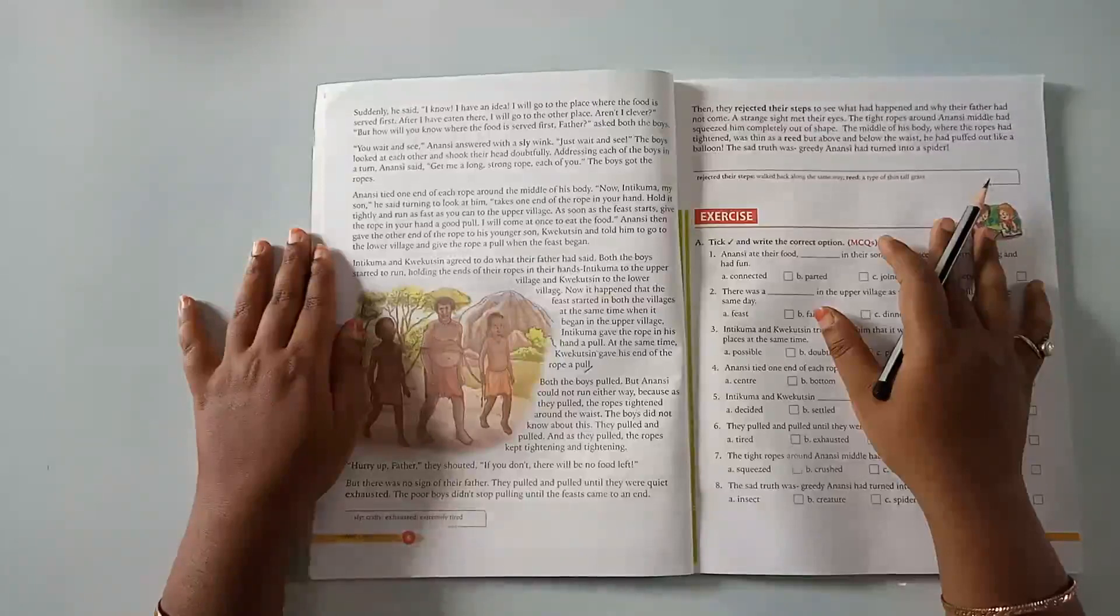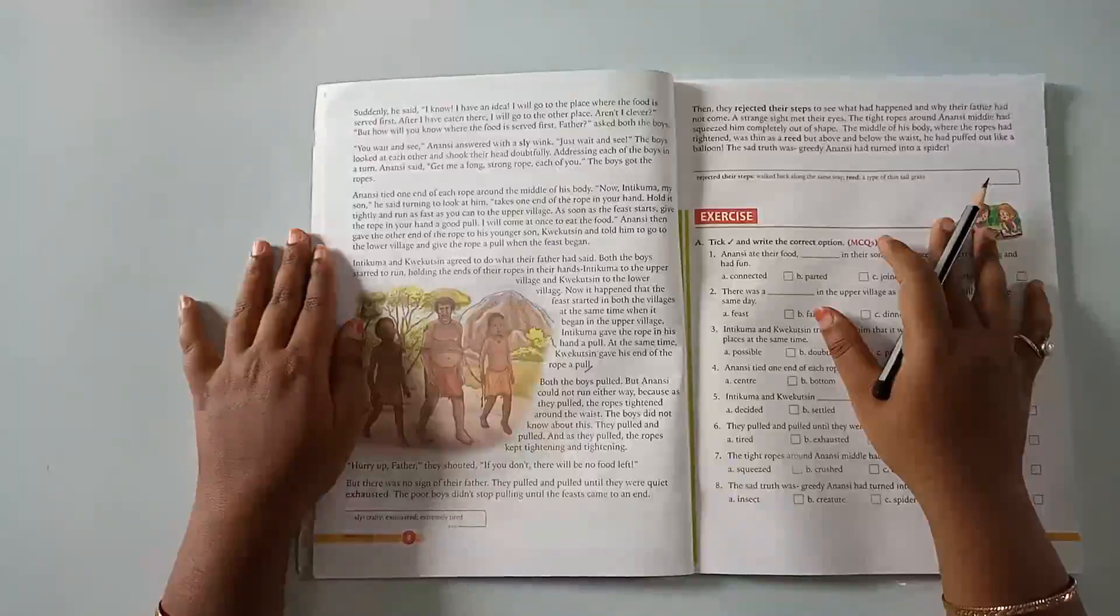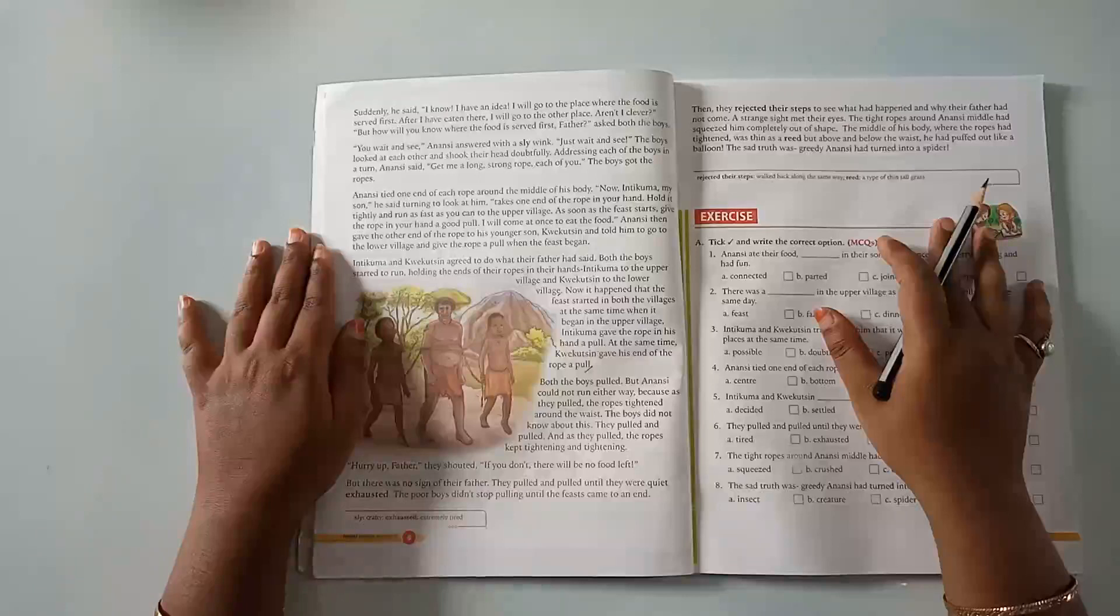Intikuma to the upper village and the Vikitsin to the lower village. Now it happened that the feast started in both the villages at the same time when it began in the upper village. Intikuma gave the rope in his hand a pull. At the same time, Vikitsin gave his end of the rope a pull.